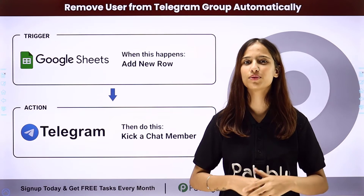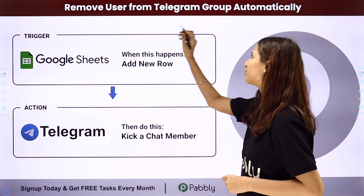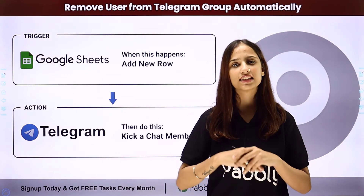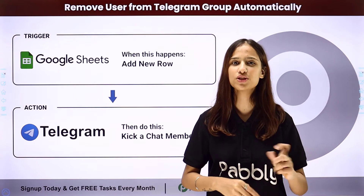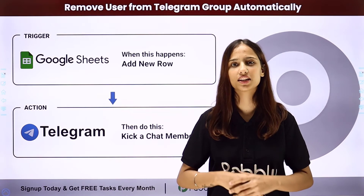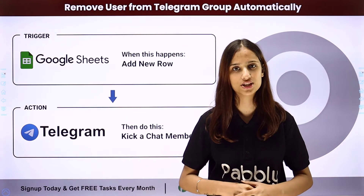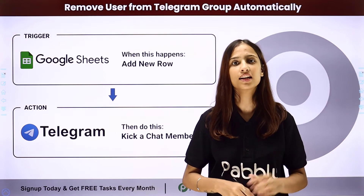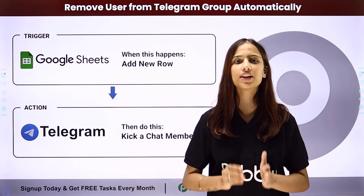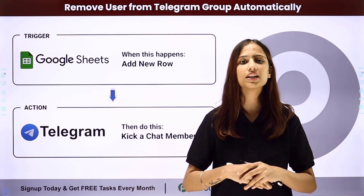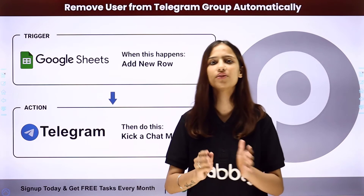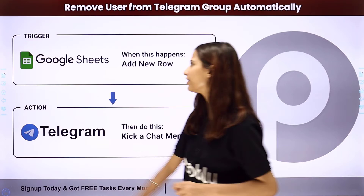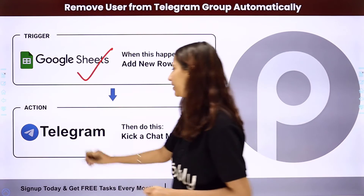Hello everyone, welcome back to Pably. In today's video we will understand how to remove user from Telegram group automatically. Let's say that you have created a Google Sheet where you have added the details of the users whom you wish to remove from your Telegram channel. Your objective is that whenever a new row is added in your Google Sheets, that user should be automatically removed from your Telegram group. To do this, you have to build a simple automation between these two applications using Pably Connect, where the trigger application will be Google Sheets and your action application will be Telegram.